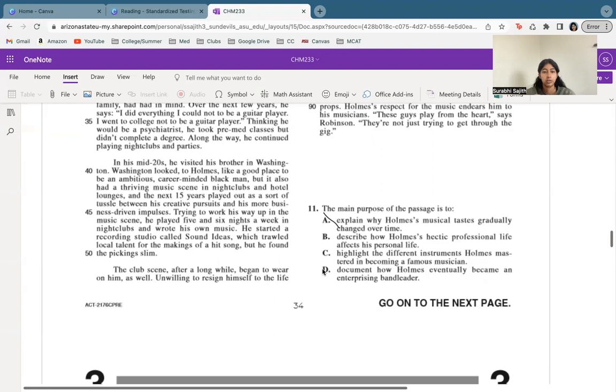Also, this doesn't discuss different instruments. The only instruments we really see a focus on, I would say, is that guitar that his, I think his brother got him. So C is also not correct. And D definitely makes sense because it talks about how over time he became successful as a band leader. All right. So D is our best answer right here.